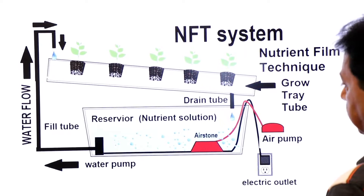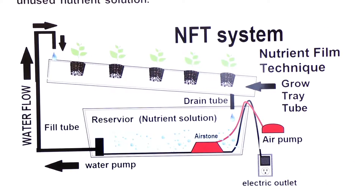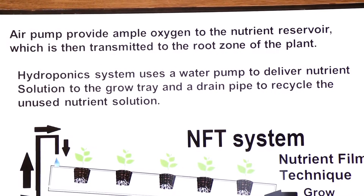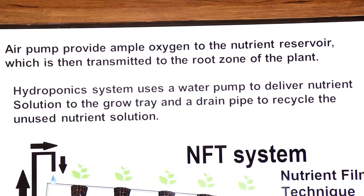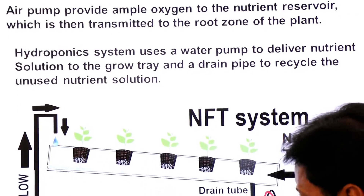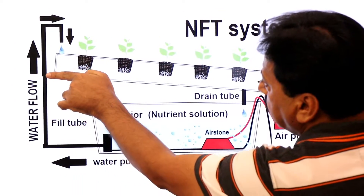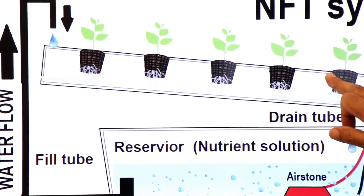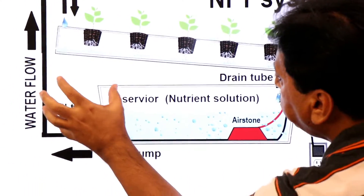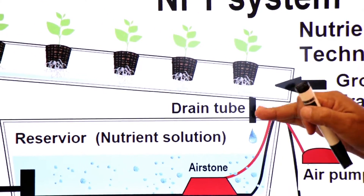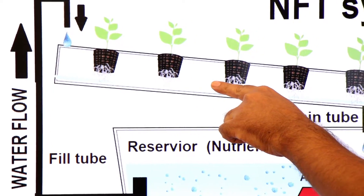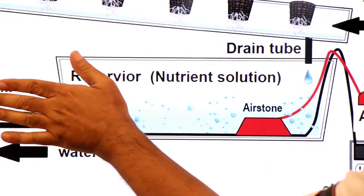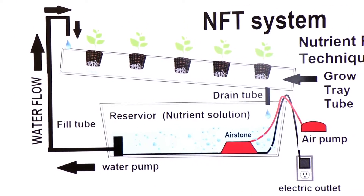What is the function of the water pump? The hydroponic system uses a water pump to deliver nutrient solution to the grow tray and a drain pipe to recycle the unused nutrient solution. Water flows from the pump into the grow tray, which is kept slightly inclined so the water can be recycled. The input tube brings water in and the output tube returns it. As water passes through, plants absorb nutrients; unused nutrients are recycled back through the input tube via the water pump to the grow tray again.